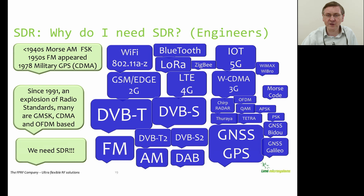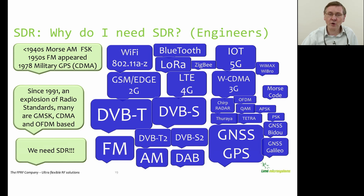So why do I need a software defined radio? Back in the 1940s radio was very simple - you had AM and frequency shift keying. Then in the 1950s FM appeared. Gradually we had the first military GPS appearing around the late 1970s. However, since 1991 there's been an explosion in radio standards including various entertainment-based radio systems, mobile radio systems, data radio systems, and satellite systems.